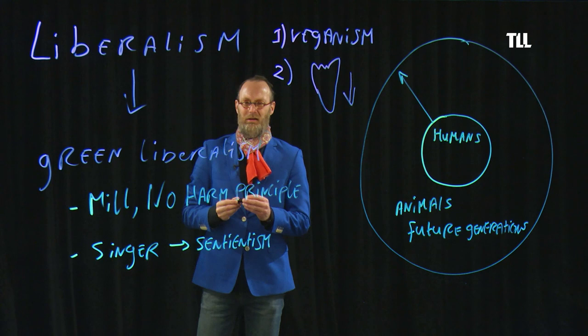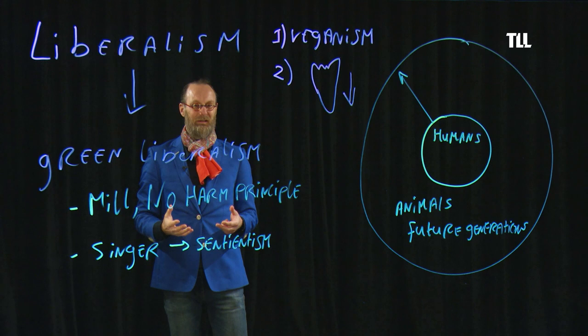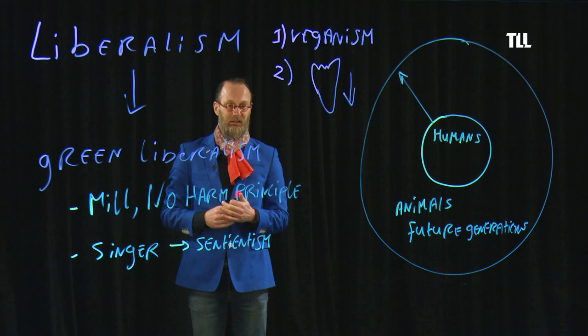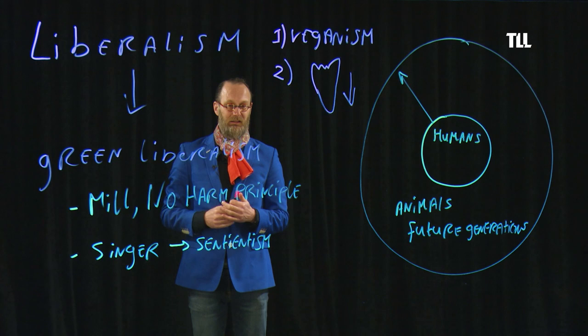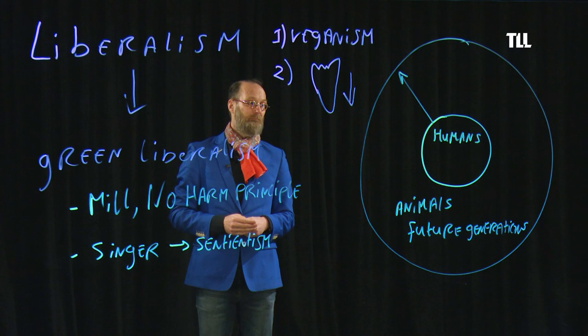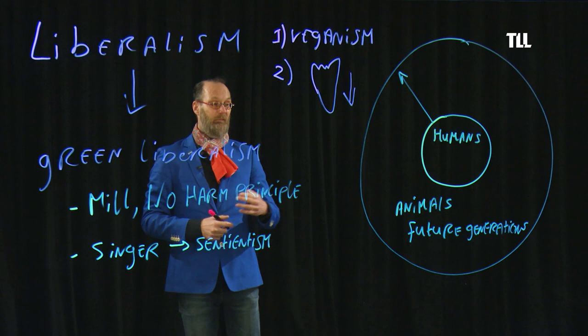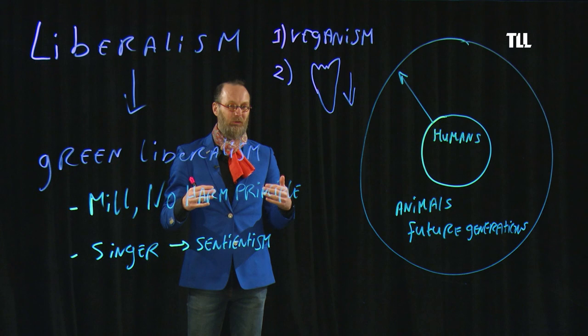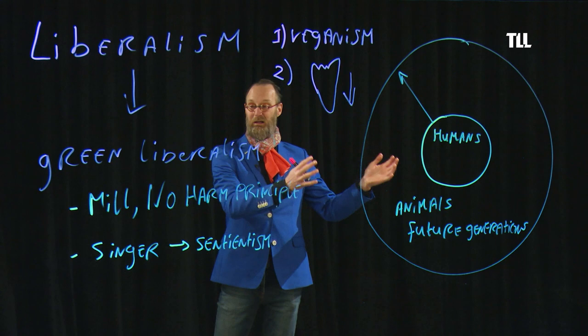There is a paradox about green liberalism: although we live in a liberal society that has expanded the moral circle to include all human beings — the Netherlands, for example, was the first country in the world to legalize same-sex marriage, a truly liberal society — if we look at it from the green liberal perspective, which also includes non-human animals and future generations, our society is not liberal at all. There is a big difference between how the world is and how, in theory, it should be.